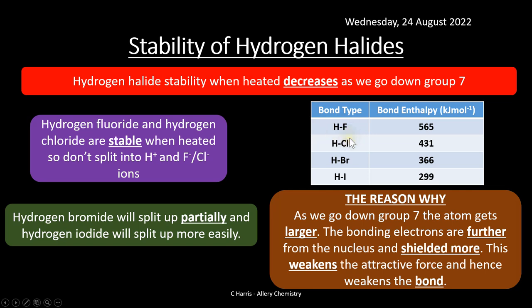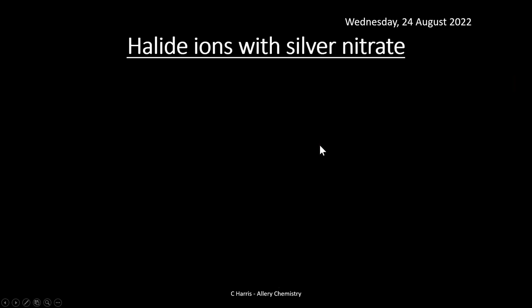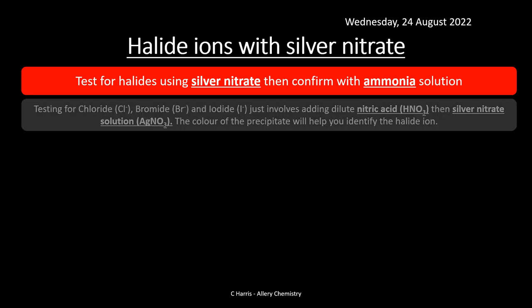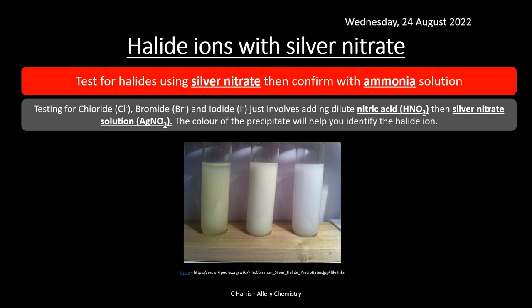We can test for halides using silver nitrate and confirm the result by adding ammonia solution. The test involves adding dilute nitric acid (HNO₃) and then silver nitrate solution to a solution containing halide ions. A precipitate forms, and the color of that precipitate helps identify the halide ion.